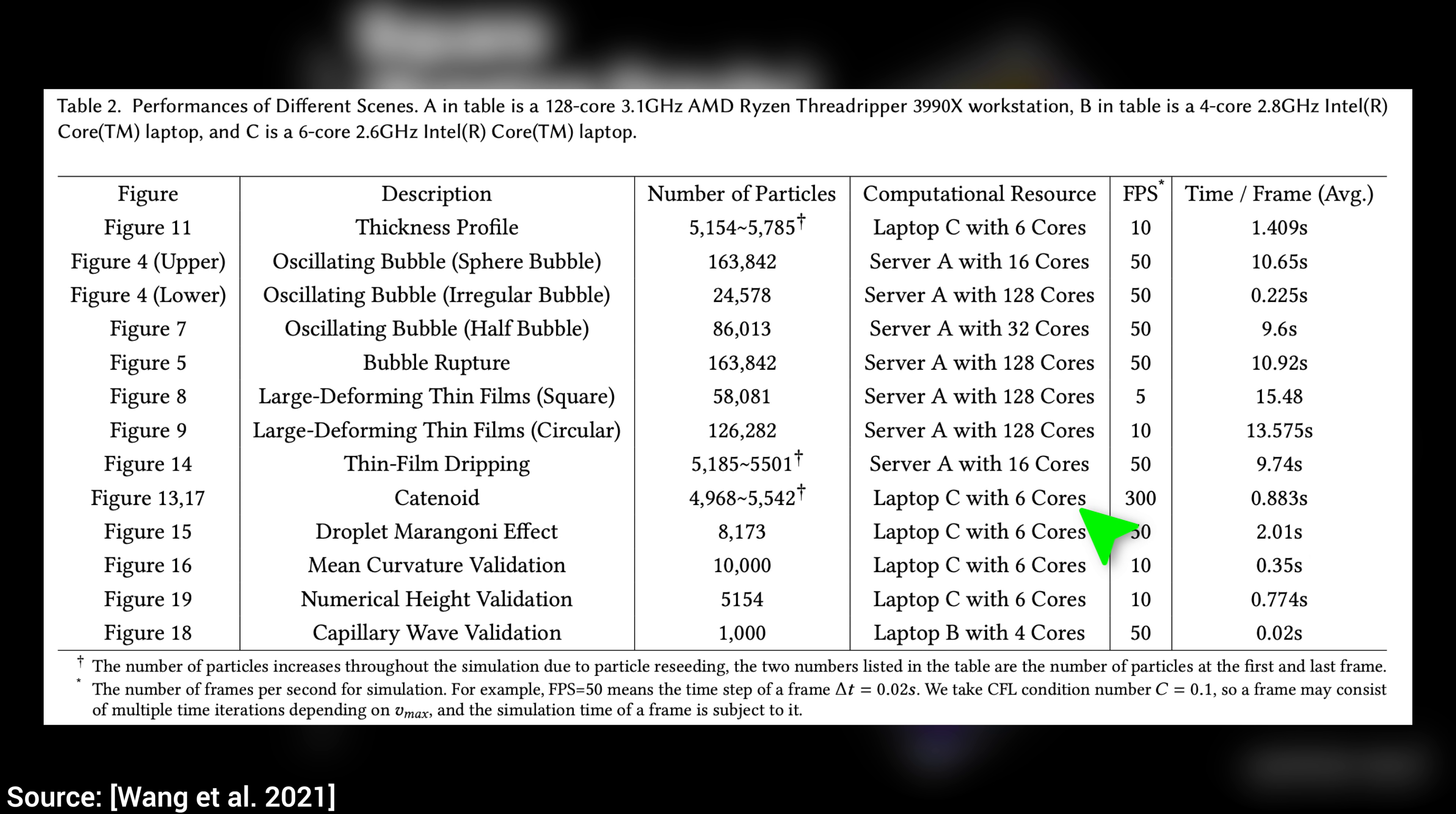Now, the most expensive experiment in this paper was the Rayleigh-Taylor instability, this took about 13 seconds per frame. This is not bad at all, we can get a proper simulation of this quality within an hour or so.